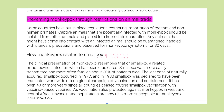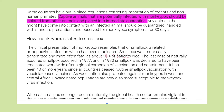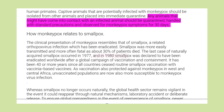Preventing monkeypox through restrictions on animal trade: Some countries have put in place regulations restricting importation of rodents and non-human primates. Captive animals that are potentially infected with monkeypox should be isolated from other animals and placed into immediate quarantine. Any animals that might have come into contact with an infected animal should be quarantined, handled with standard precautions and observed for monkeypox symptoms for 30 days.